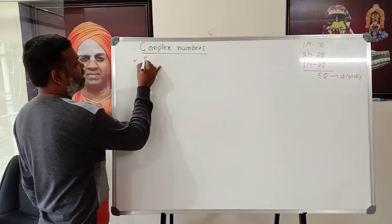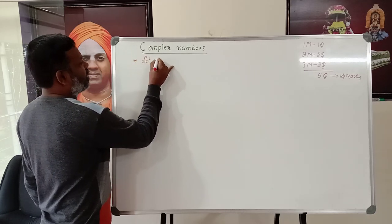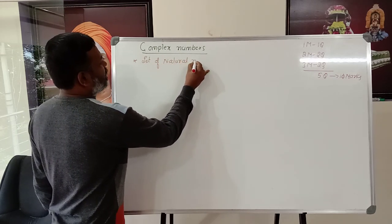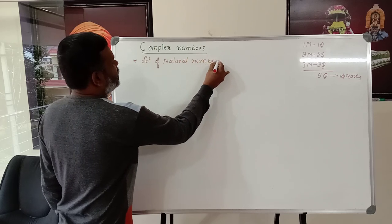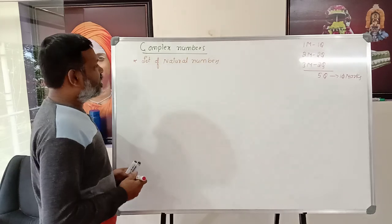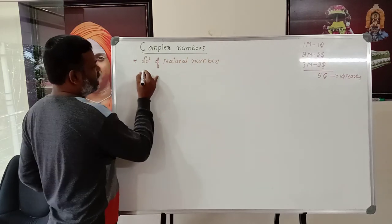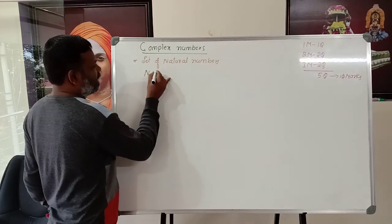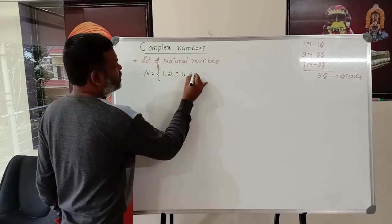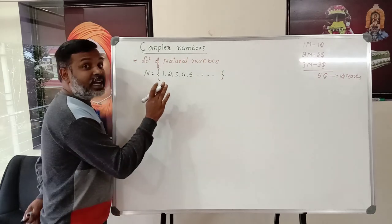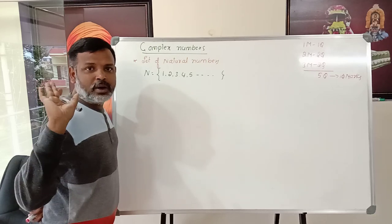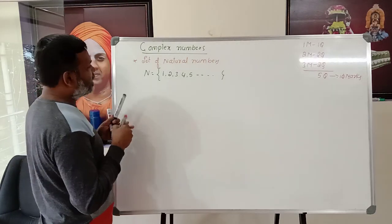The first number system is the set of natural numbers. This set of natural numbers is also known as counting numbers, denoted by capital N. It contains the numbers 1, 2, 3, 4, 5, and so on — that is, only positive whole numbers excluding zero.